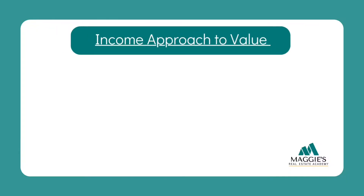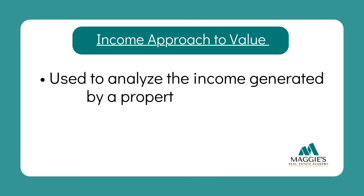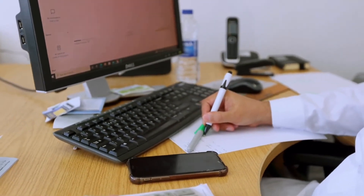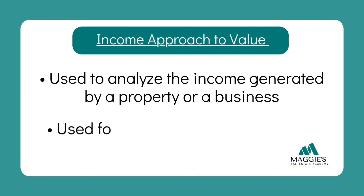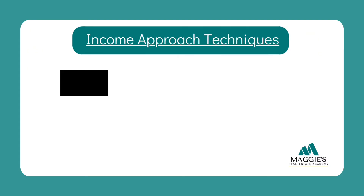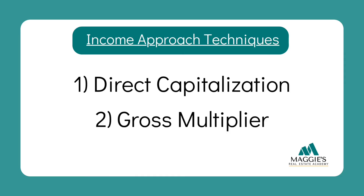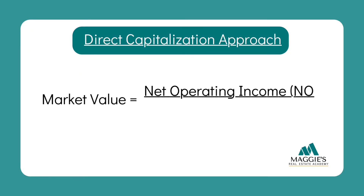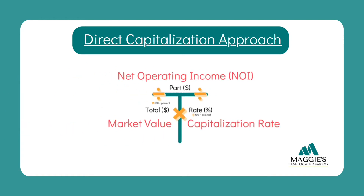Last but not least, let's uncover the income approach, or income method. This approach analyzes the income generated by a property or business to determine its value, and is used for income-producing properties. There are two techniques: direct capitalization and gross multiplier. To find market value using direct capitalization, you take the net operating income and divide it by the capitalization rate. For these questions on your real estate exam, you can use the T-chart. Let's look at a few sample questions.